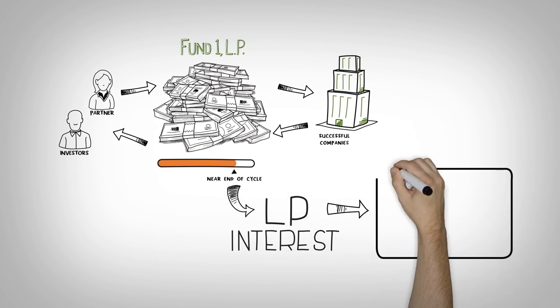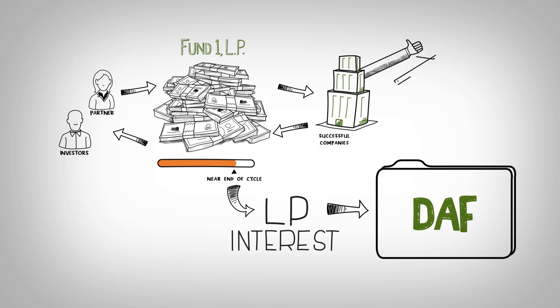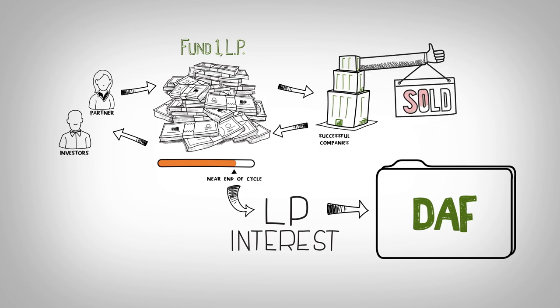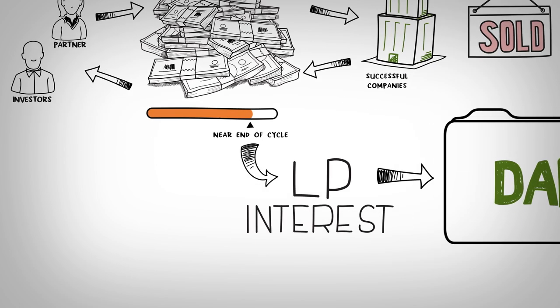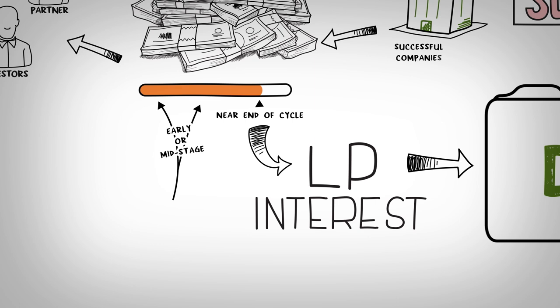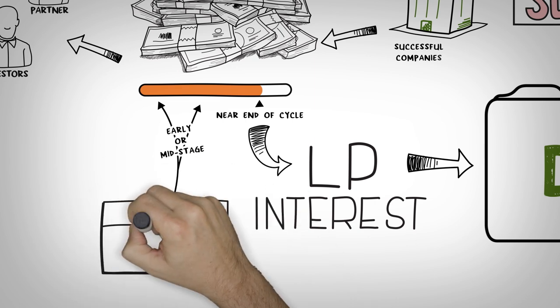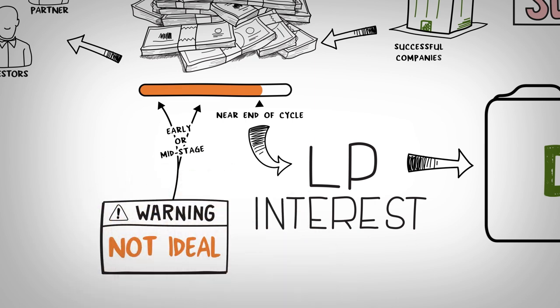Giving this interest will allow the anticipated distributions to flow to the DAF when the remaining portfolio companies sell. However, if there is not the possibility of selling the LP interest, it's generally best to contribute the LP interest in the later stages, closer in time to liquidity events.